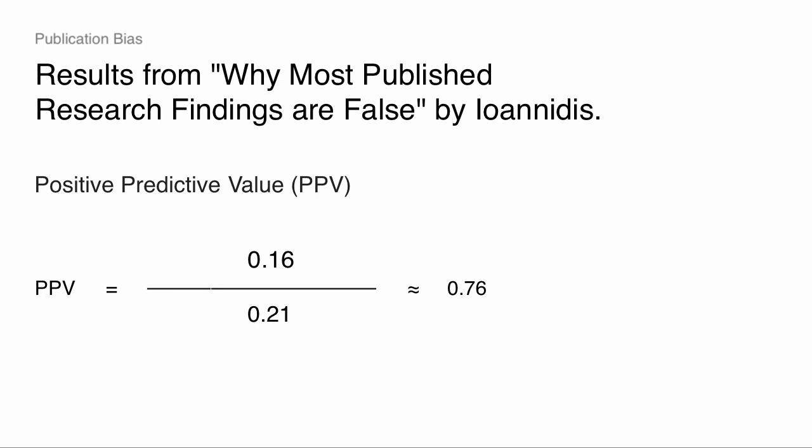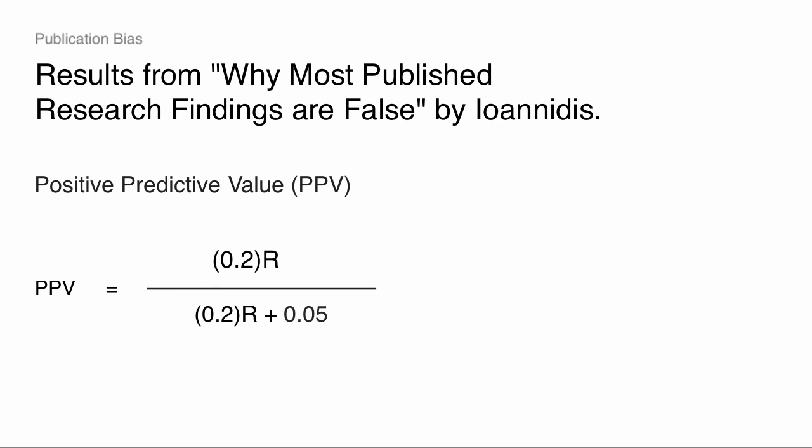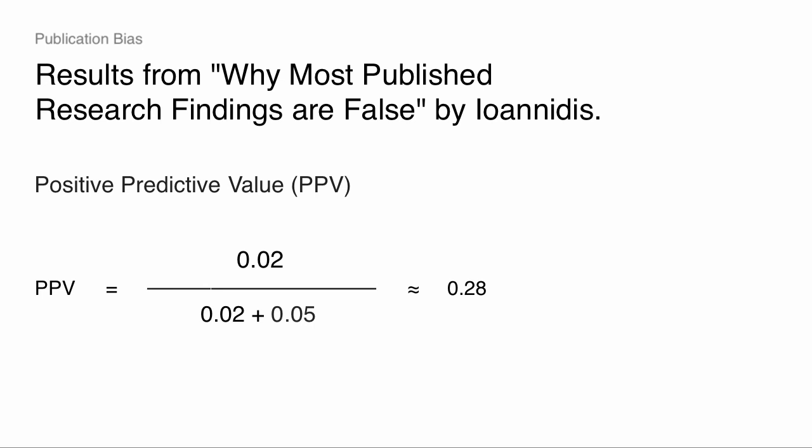That's not great — we'd like PPV to be higher. The social psychologist would say 1 minus beta is usually 0.2, and people are testing wacky stuff where R is 0.1. In that case, 0.2 times 0.1 is 0.02, and 0.02 over 0.02 plus 0.05 is really small. That means 28% of studies have real results and 72% are false positives in that kind of literature. So in development economics maybe 75–80% of findings that claim to be true are true, but things can get worse.